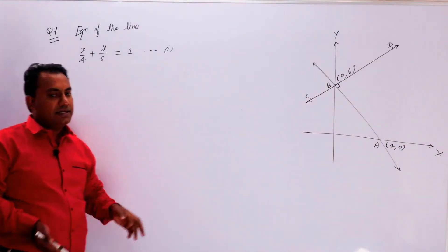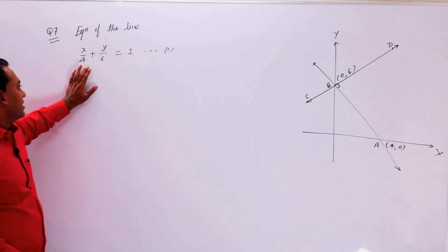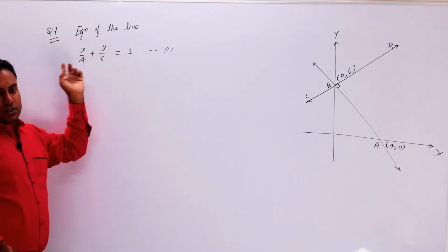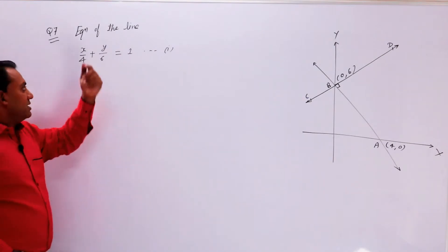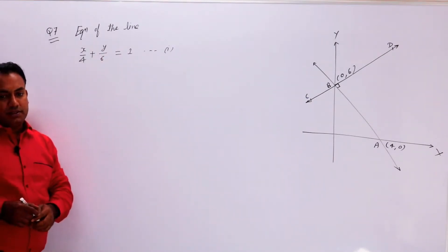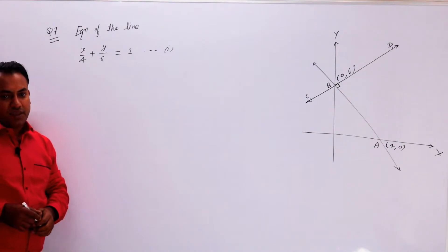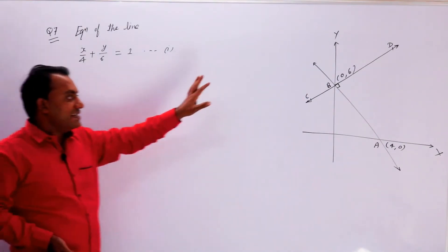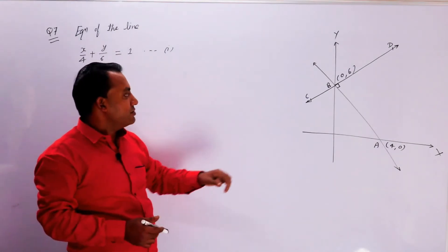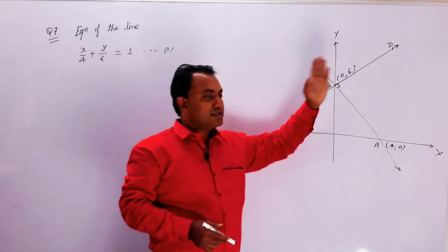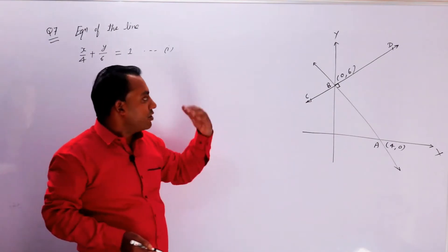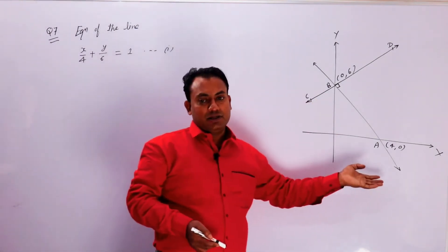क्योंकि यह intercept form है, यहीं से जानकारी मिल गई कि x-axis को 4 units की distance पर intersect करेगी, जबकि यह line y-axis को 6 units की distance पर intersect करेगी। तो हम equation of line CD पता करने के लिए point-slope form यूज़ करेंगे। Point मिल गया — यह line (0,6) से pass होती है।